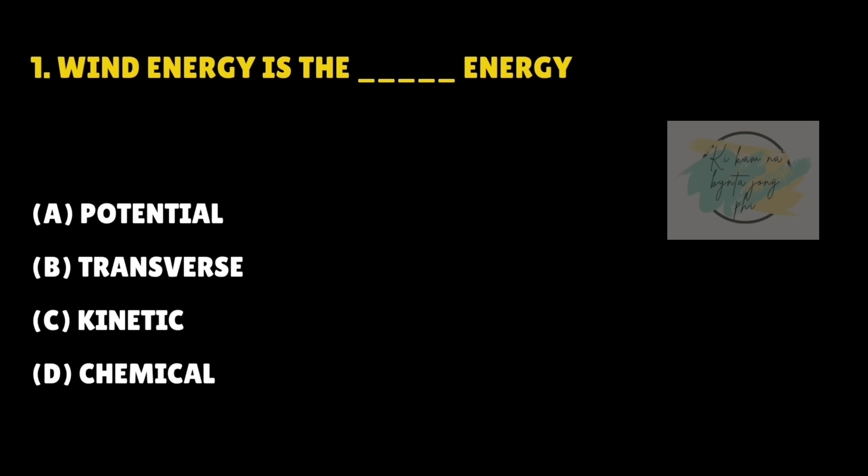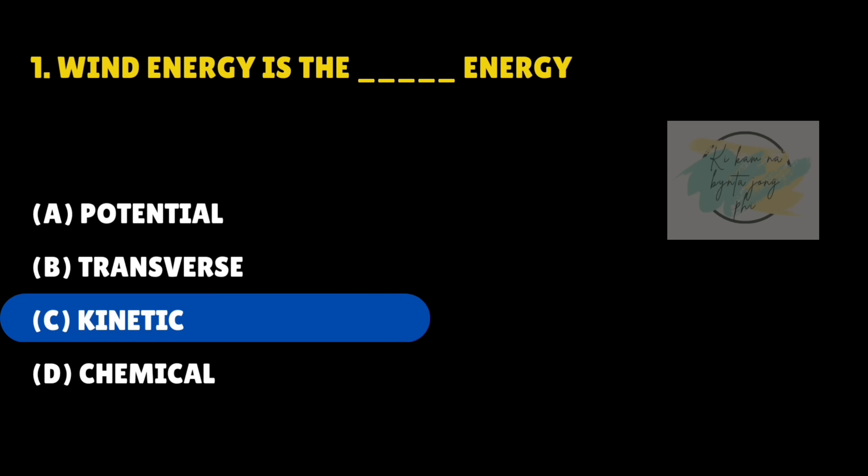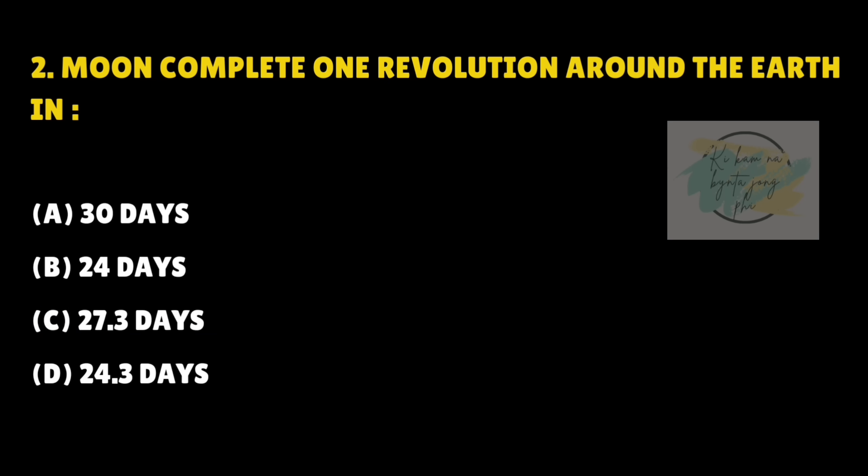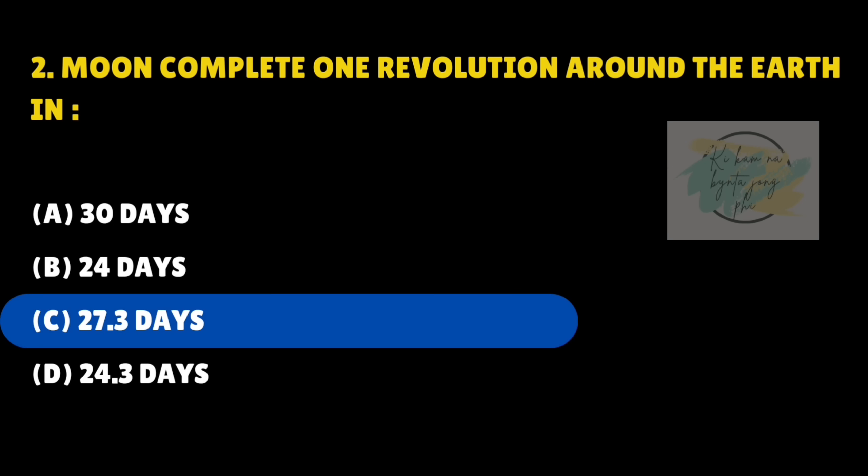When energy is there? Dash energy. Answer is C. The Moon completes one revolution around the Earth in — answer is C — 27.3 days.